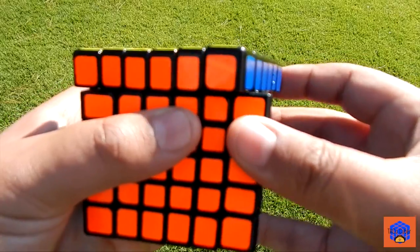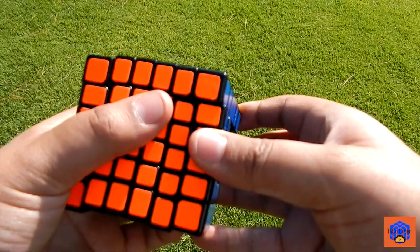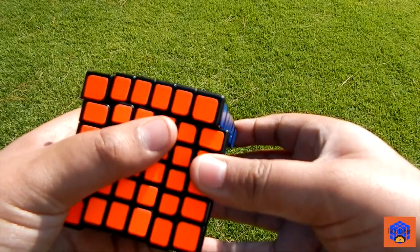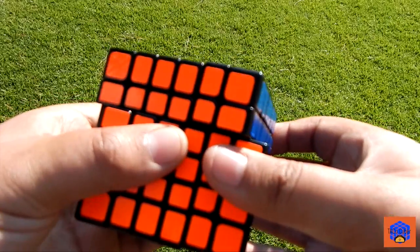Corner cutting in this cube is almost a cubie, nothing extraordinary. Reverse corner cutting is about half a cubie. However, corner cutting in the second layer is pretty amazing for a 6x6.